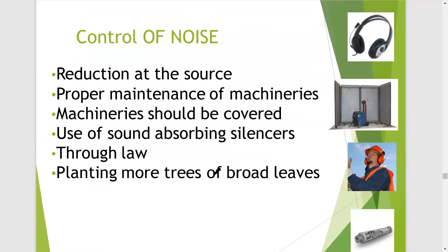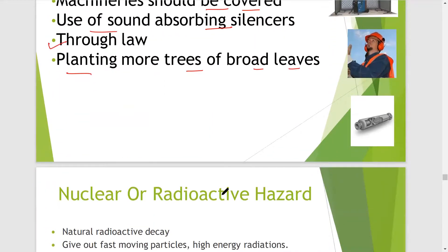How can we control noise pollution? First, reduction at the source. Then proper maintenance of machineries that produce noise — machineries should be covered so they produce less sound. Use of sound-absorbing silencers, especially in vehicles. We can also control it by making laws and regulations strict and implementing them strictly. Planting more broad-leaved trees or making green corridors can also help in reducing noise.